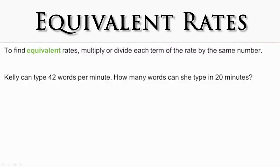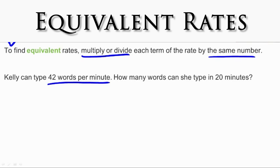Let's learn how to find equivalent rates. To find equivalent rates, multiply or divide each term of the rate by the same number. Let's put this to use with a sample problem. Here we have Kelly, who can type 42 words per minute. How many words can she type in 20 minutes? In order to solve this problem, the first thing we do is write down the unit rate.